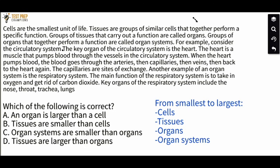It's really these first few sentences that give us the information we need. It tells us cells are the smallest unit of life, then tissues are groups of similar cells, then groups of tissues are called organs, and groups of organs are called organ systems. So we can see the different components listed from smallest to largest, and I typed this out in blue for you.